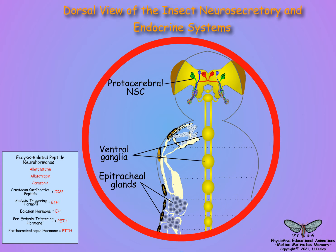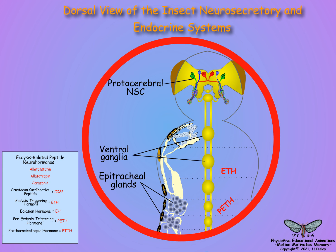At molting, a series of peptide hormones are released from central nervous ganglia and peripheral glandular cells that regulate the molting events. First, corazonin from brain and nerve cord neurosecretory cells acts on epitracheal gland cells to release ecdysis-triggering hormone and pre-ecdysis-triggering hormone. These hormones stimulate ventral ganglia to turn on pre-ecdysis behavior.